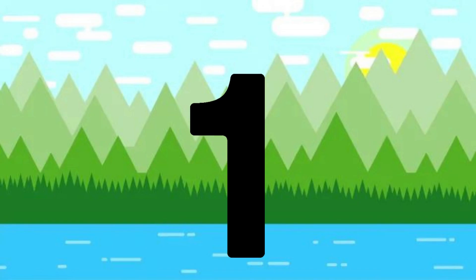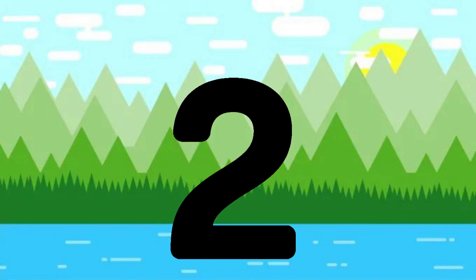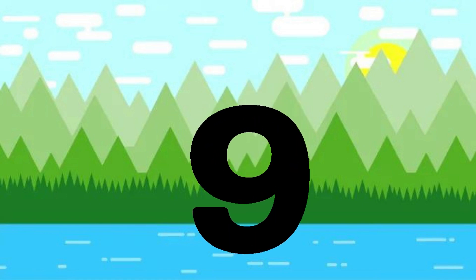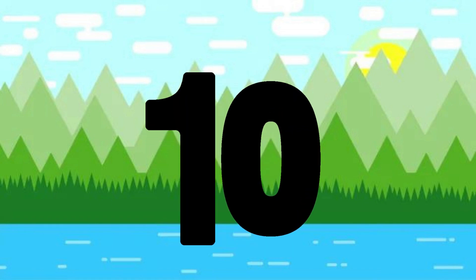One little, two little, three little numbers. Four little, five little, six little numbers. Seven little, eight little, nine little numbers. Ten little numbers.